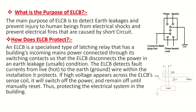How does ELCB protect? An ELCB is a specialized type of latching relay that has a building's incoming mains power connected through its switching contacts, so that the ELCB disconnects the power in an earth leakage or unsafe condition. The ELCB detects fault currents from live or hot to the earth or ground wire within the installation it protects. If high voltage appears across the ELCB's sense coil, it will switch off the power and remain off until manually reset, thus protecting the electrical system in the building.